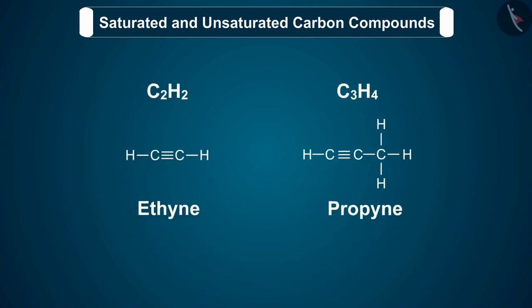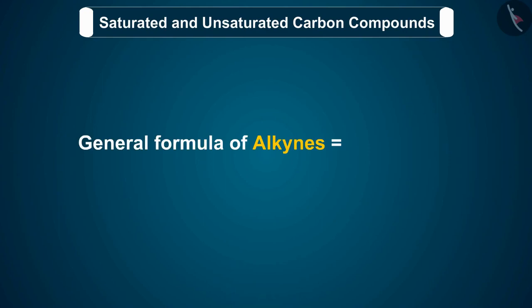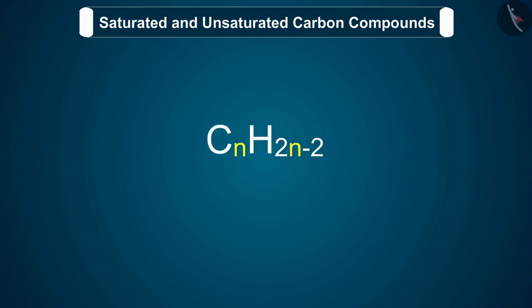Ethyne and propyne are alkynes because they contain a triple bond between two carbon atoms. Also, another amazing fact is that there can be no alkyne having only one carbon atom. The general formula of alkynes is CnH2n-2, where n is the number of carbon atoms in one molecule of alkyne.